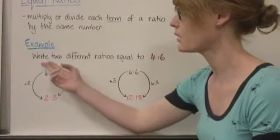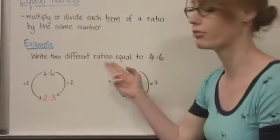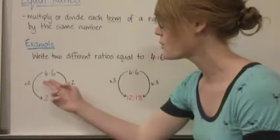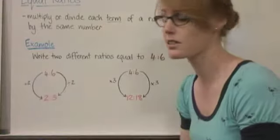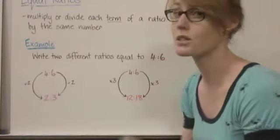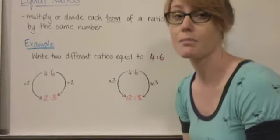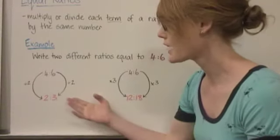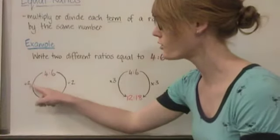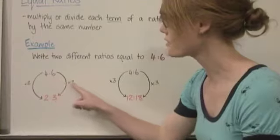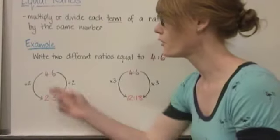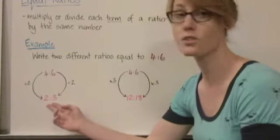So here's an example. If we were asked to write two different ratios equal to 4 to 6, here's how we could do it. We start with our ratio 4 to 6, and then each term, 4 and 6, would need to be either multiplied or divided by the same number. So in this case, I've decided to divide each term by 2. 4 divided by 2 is 2, and 6 divided by 2 is 3. So an equal ratio for 4 to 6 would be 2 to 3.